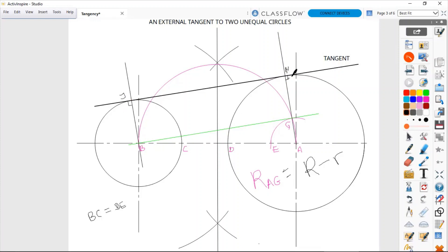This parallel line we are drawing, which is actually the tangent, is the distance of BC, or distance of BY, away from the tangent in green.